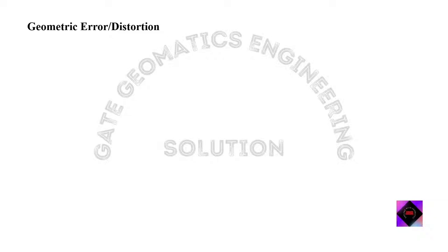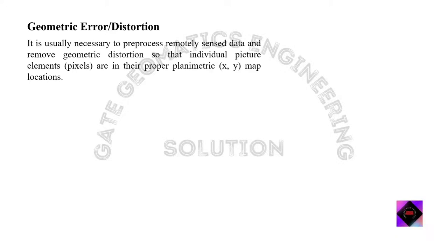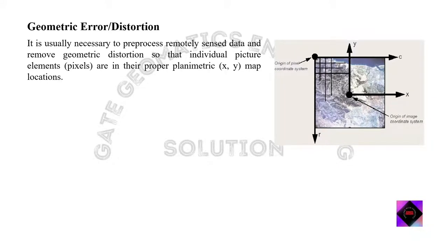First, let's understand what is geometric error or distortion. Once you have an image, there is some geometric distortion present. We say geometric error exists because we are representing a 3D surface in a 2D plane. Certain issues come up related to sensors, perspective, and other factors like camera motion, platform motion, altitudinal interference, and so on. These distortions are inherent in images as we attempt to represent the 3D earth surface as a 2D image, so it is necessary to pre-process remotely sensed data and remove geometric distortion so that individual pixels are in their proper planimetric XY coordinate map locations.